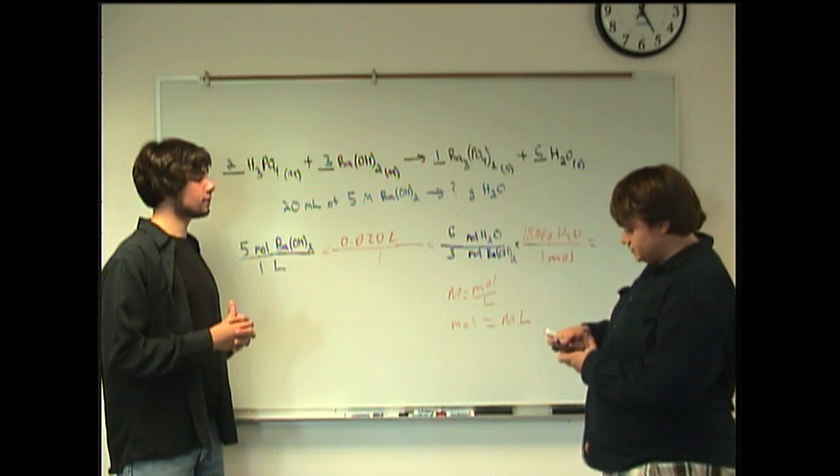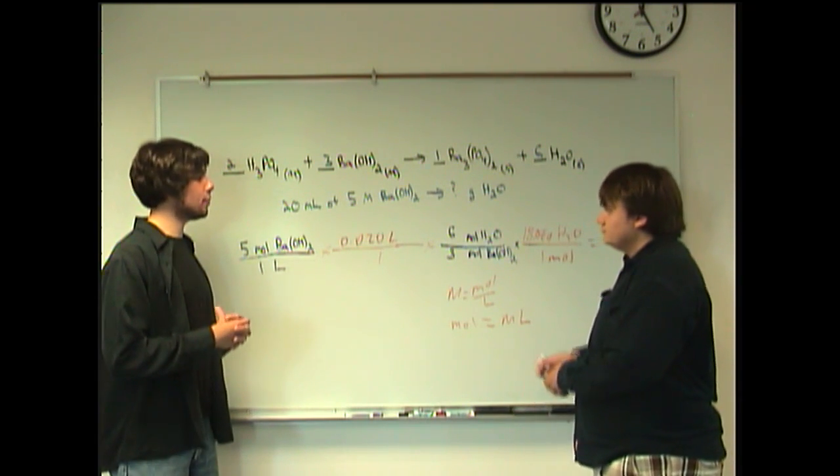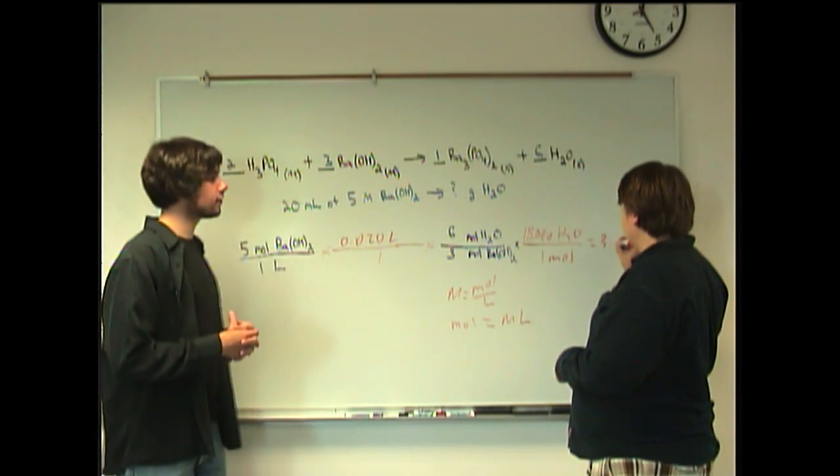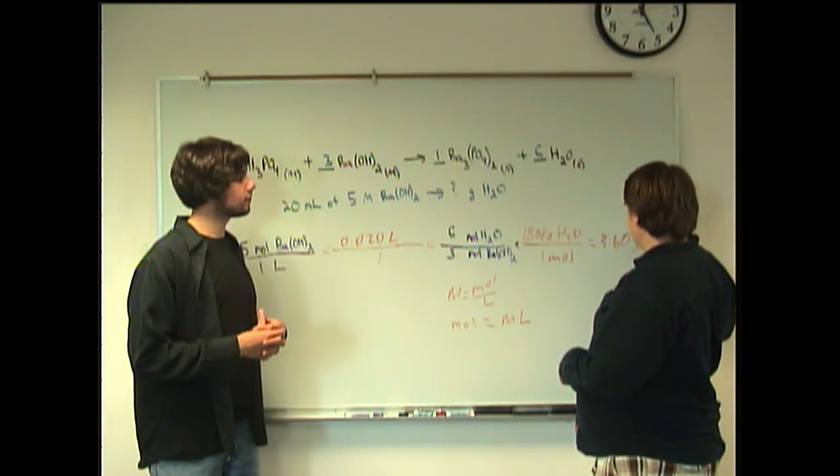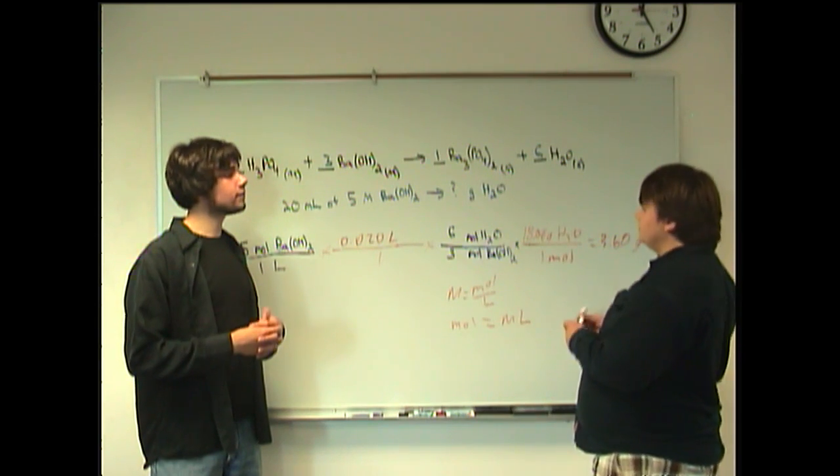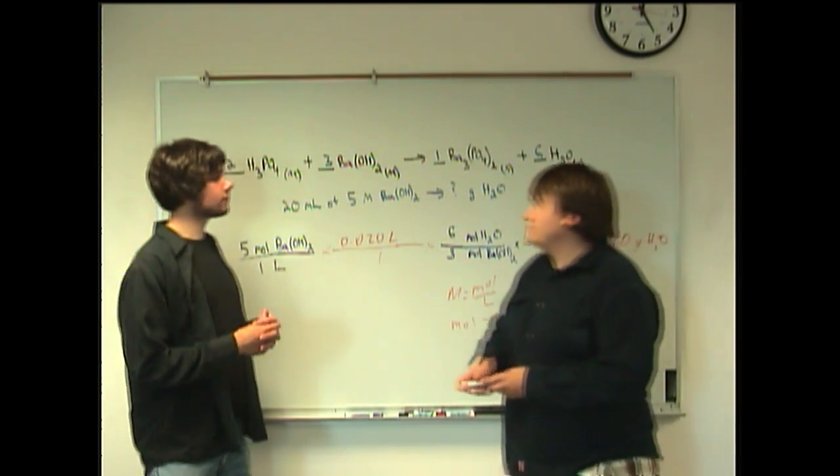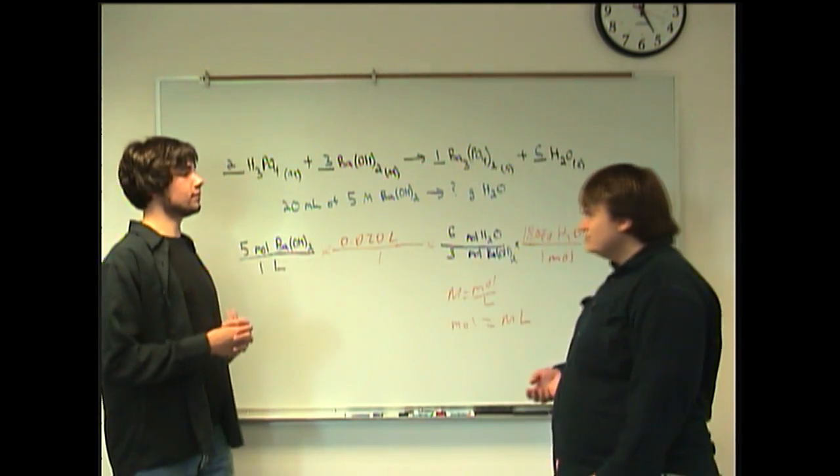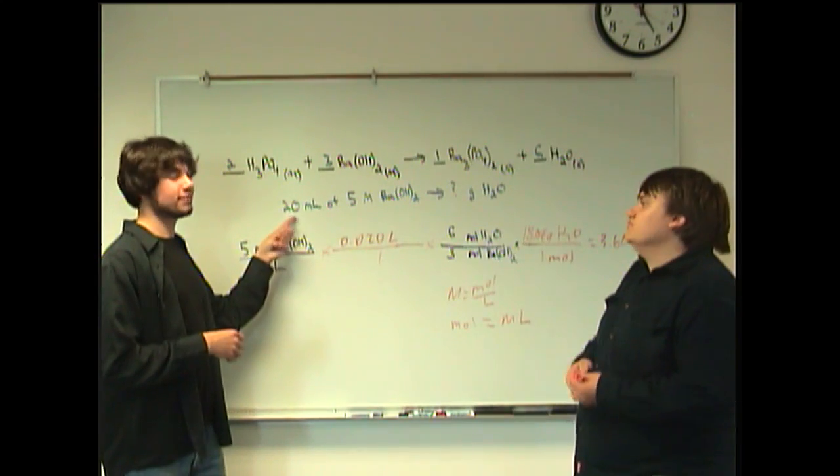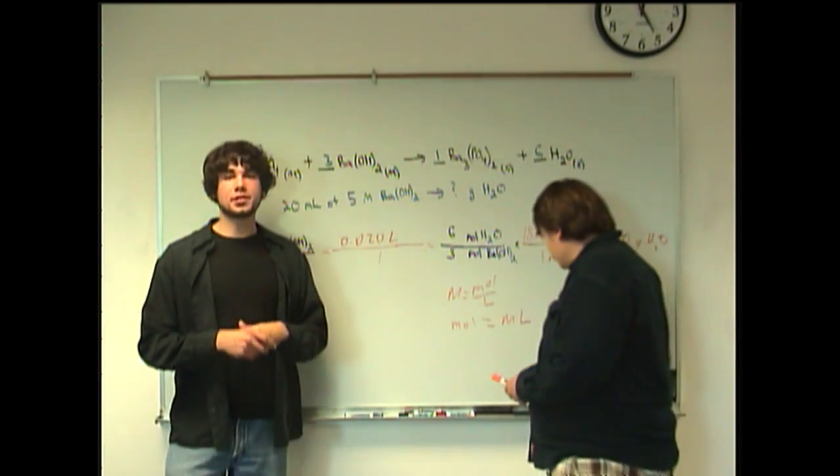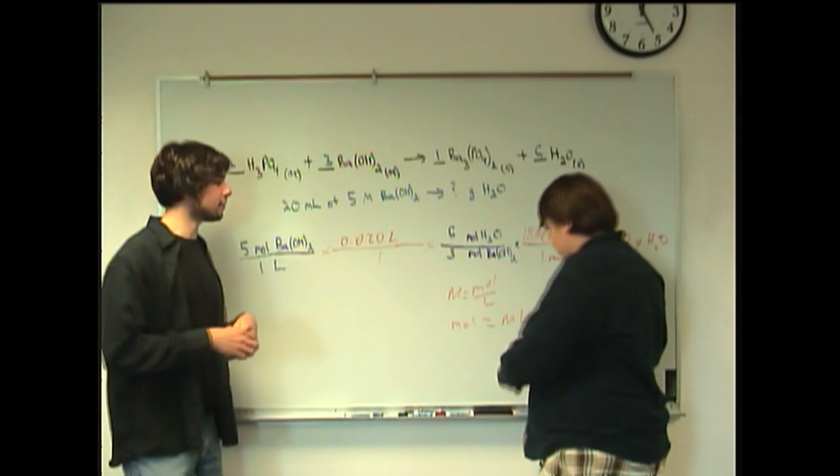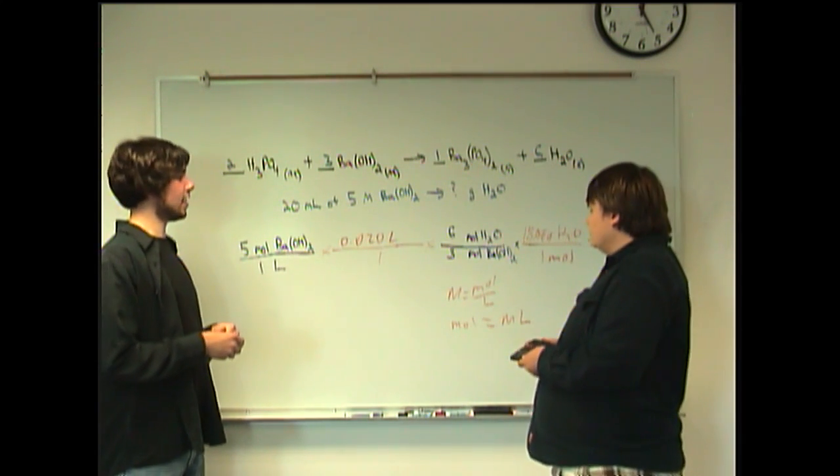So it's 3.60 grams of water. 3.60 grams of water, which may seem small considering it's five moles per one liter, but we only had 20 milliliters, didn't we? So we wouldn't produce that much. Just a little tiny amount. That puts it into perspective. Exactly.